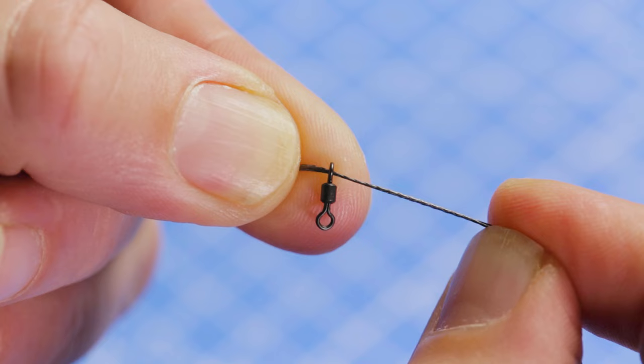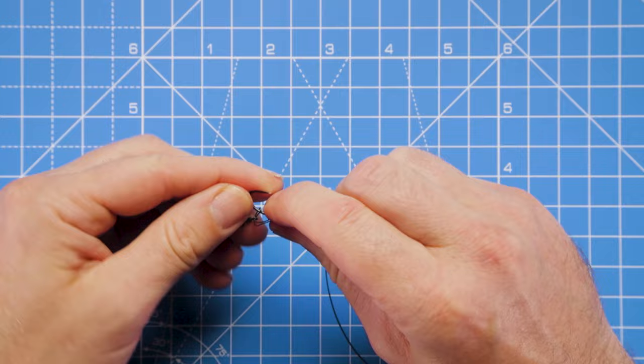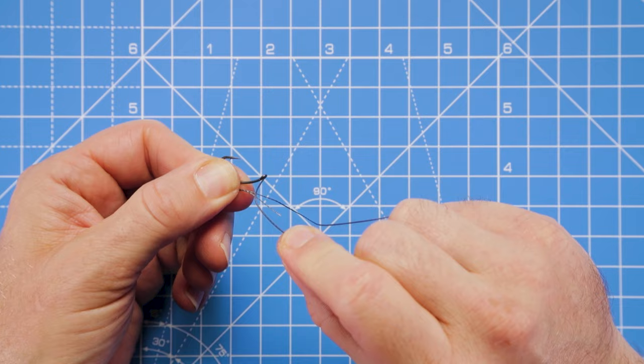There you can see that loop's going through the micro swivel. Now we can pass the hook through the loop section behind the micro swivel to create our D section, and then we take both ends of the hook link through the eye.